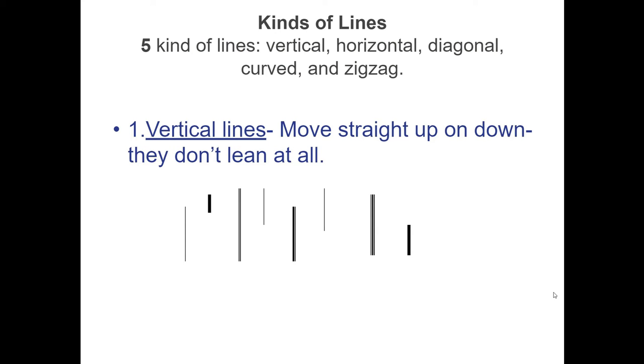The kinds of lines. We have five kinds of lines you probably use when writing your name: vertical, horizontal, diagonal, curved, and zigzag. The first is a vertical line—something that goes straight up and down and doesn't lean over to the side.